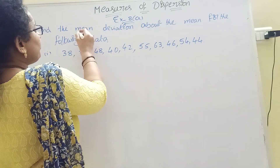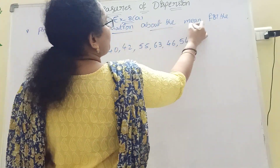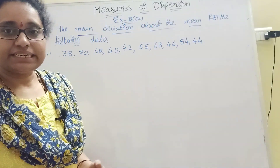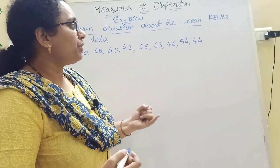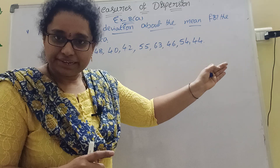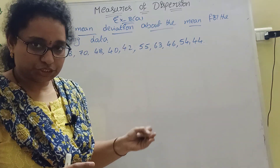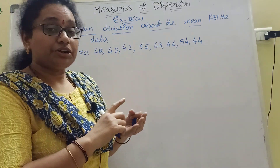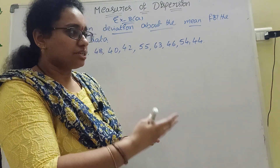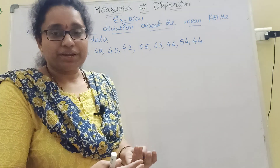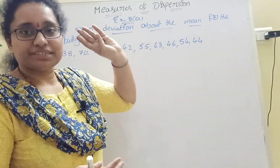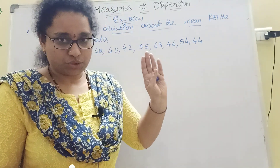The main topics we will discuss in this chapter are: mean deviation about the mean, mean deviation about the median, variance, and standard deviation. These four models will be discussed in Measures of Dispersion.